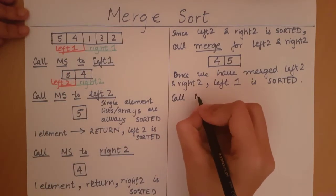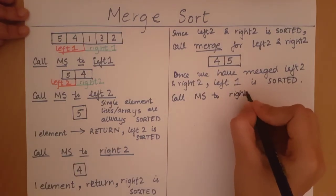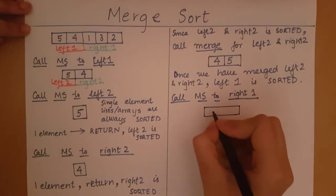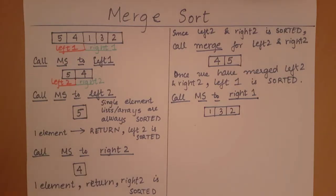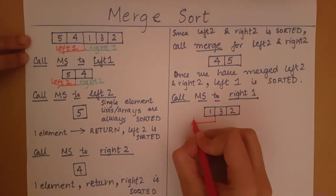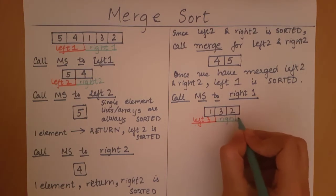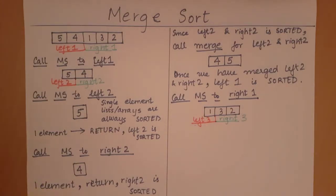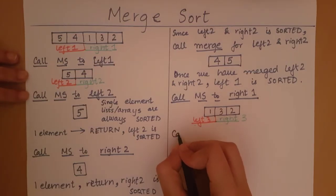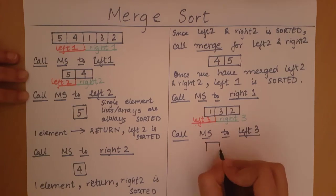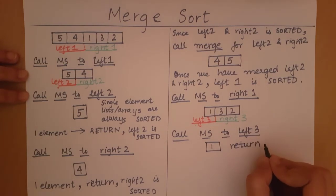When we call merge sort on right one, we get a list: one, three, two. We divide it into left three and right three. To sort right one, we need to sort left three, then sort right three, and then merge sorted left three and right three. Let's first call merge sort on left three — it is a single element list or array, so we return saying left three is sorted.